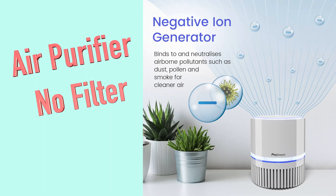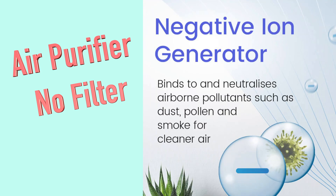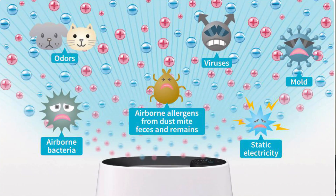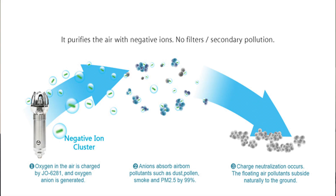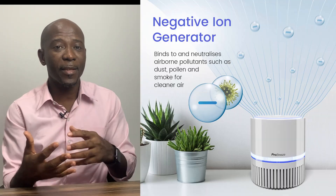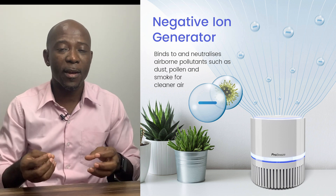Now what about the ionizer air purifier? There is no filter in it. This device is designed to clean the air by discharging negative ions into the air. When those negative ions are released, they attach themselves to the pollution or pollutants, and by doing that they bring them down — they just drop around you — leaving the clean air for you to breathe. So this one doesn't suck any air; it rather releases something.